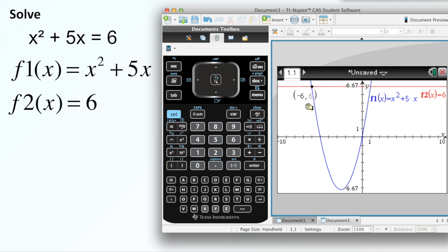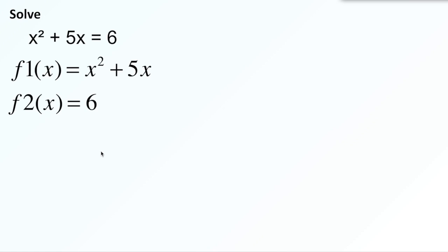So it looks like one intersection is here at negative 6, 6. So that's going to be important. So let's write that one down. We'll go negative 6, 6. That is one of my intersection points.